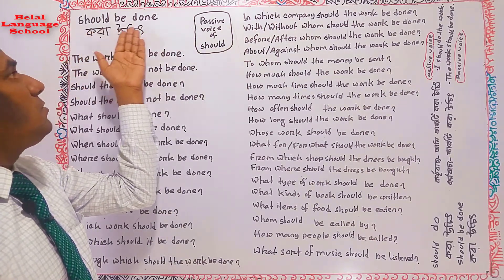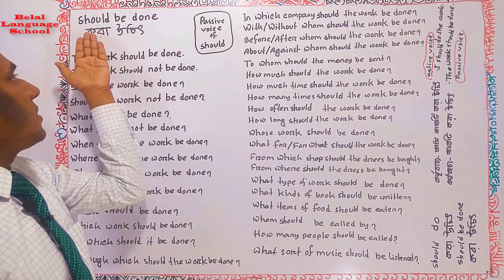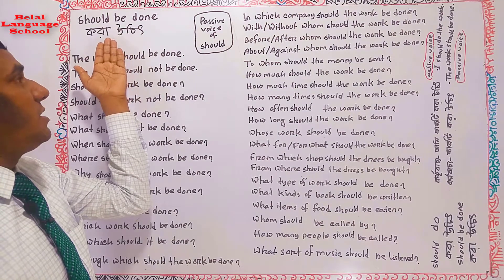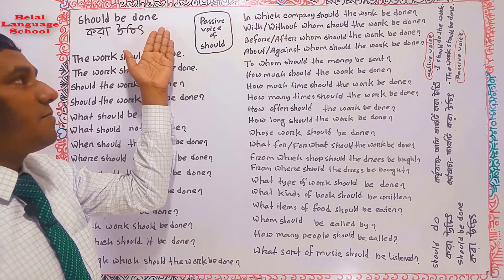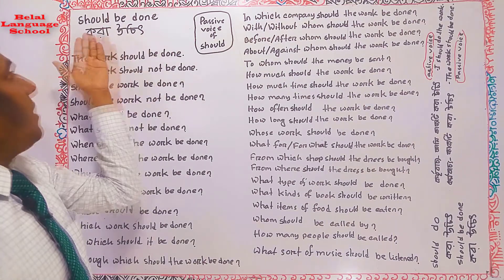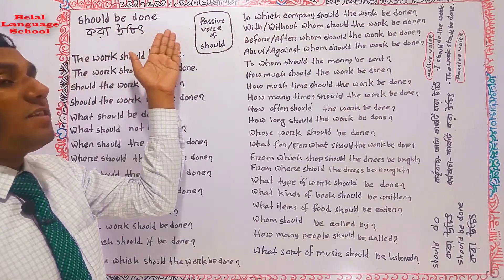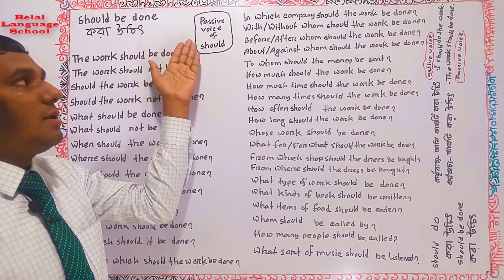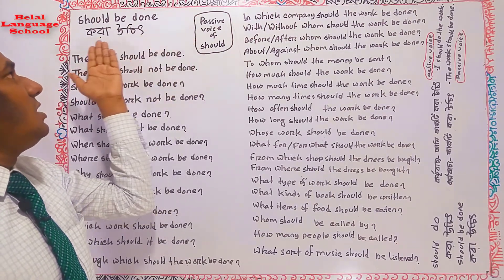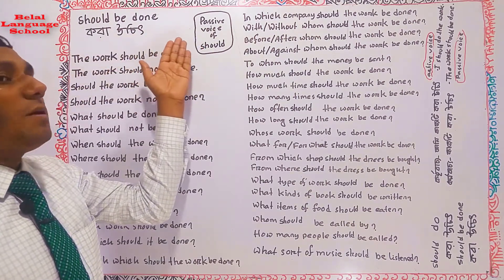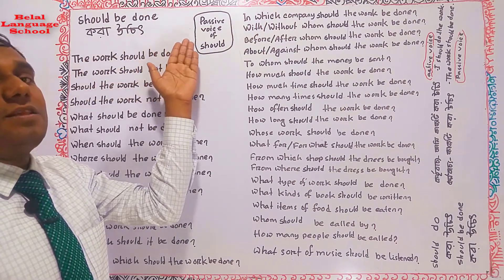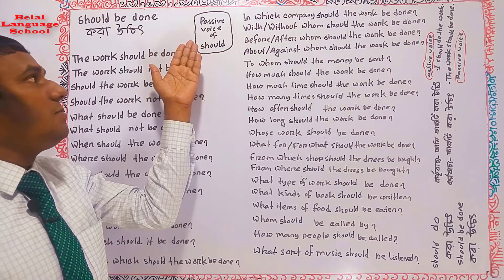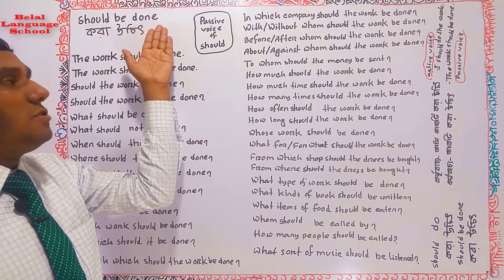Let's look at example sentences with Bangla meanings: 'The book should be read' — boi ta pora uchit. 'The letter should be written' — chithi ta lekha uchit. 'The room should be cleaned' — room ta poriskar kora uchit. 'The rice should be cooked' — bhat ranna kora uchit. 'I should give him the money' — ami take taka deoa uchit. 'We should give Rahim and Karim money' — taka deoa uchit.